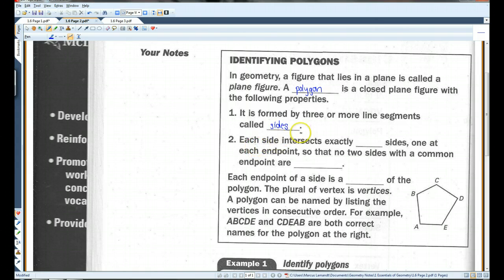Each side intersects exactly two sides, one at each end point, so that no two sides with a common end point are collinear. Each end point of a side is a vertex of the polygon. The plural of vertex is vertices, that's on the other page also, a polygon can be named by listing the vertices in consecutive order.